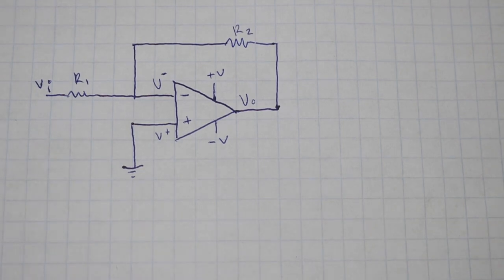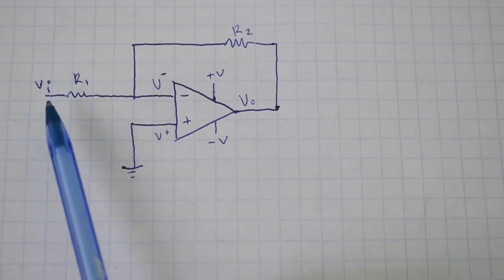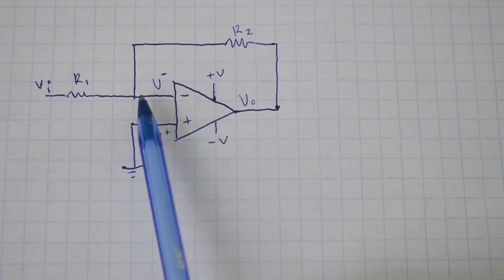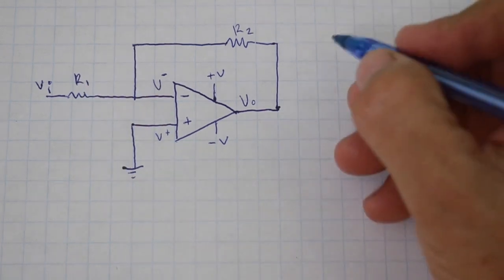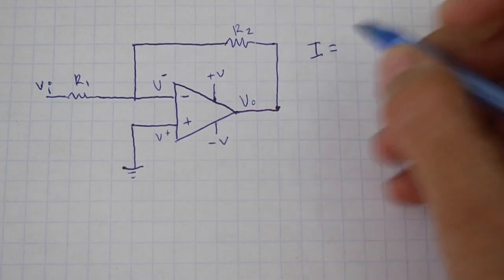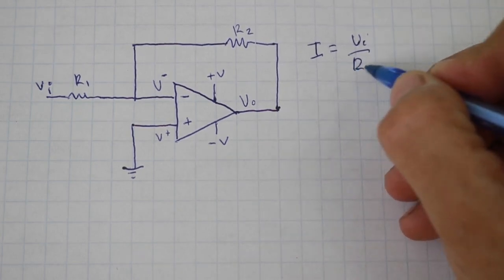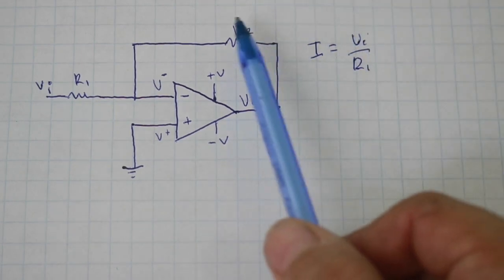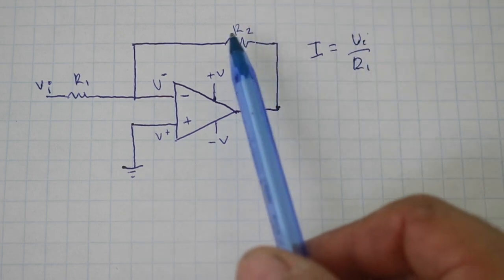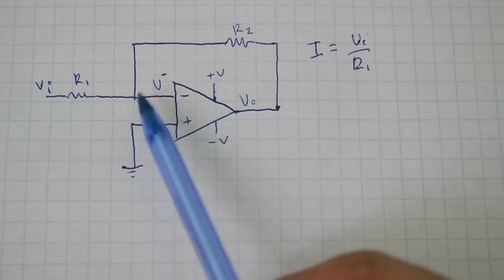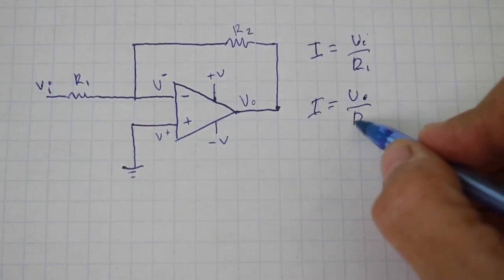Let's see what happens with the current. This resistor on this side we have voltage VI, and here, remember that the voltage is zero. Therefore the voltage drop in R1 is VI. So the current through resistor 1 is VI divided by R1. Now the other resistor, the voltage drop again is V0, Vout, because again the voltage here is zero. So the current is Vout divided by resistor 2.